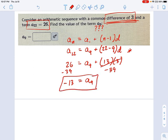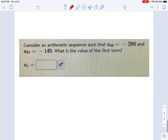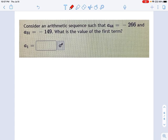Key point being, you can change the subscripts on the explicit formula as long as you are consistent and you do it everywhere. So let's take that idea and use it on this problem. We're told that the 44th term is negative 266, the 31st term is negative 149. What's the value of the first term?